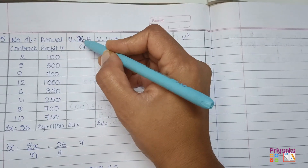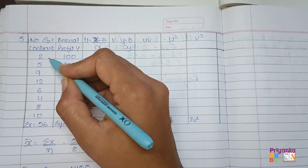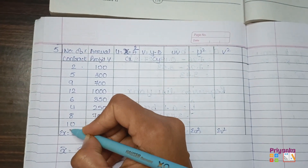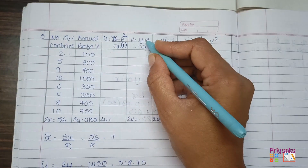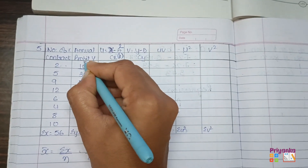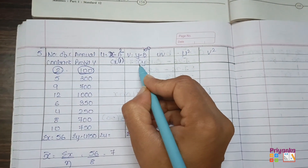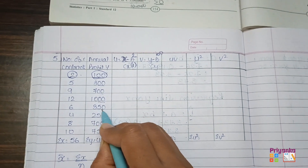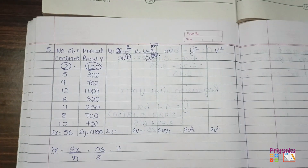So for UV, we have X minus A. For the assumed mean, first check the number with the smaller values. Here we can see 2. Now check for CX by looking at the last two digits of the Y values — they all end in zeros. Here we can see 50. So all numbers go into the 50 times table, meaning CY will be 50.